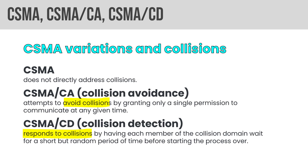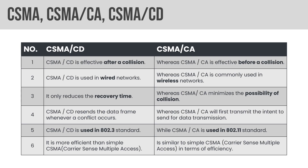To summarize: CSMA/CD is effective after a collision, while CSMA/CA is effective before a collision. Ethernet is an example of collision detection; token ring is an example of collision avoidance. CSMA/CD is used in the 802.3 standard, where CSMA/CA is used in the 802.11 standard. Make sure you're familiar with these.